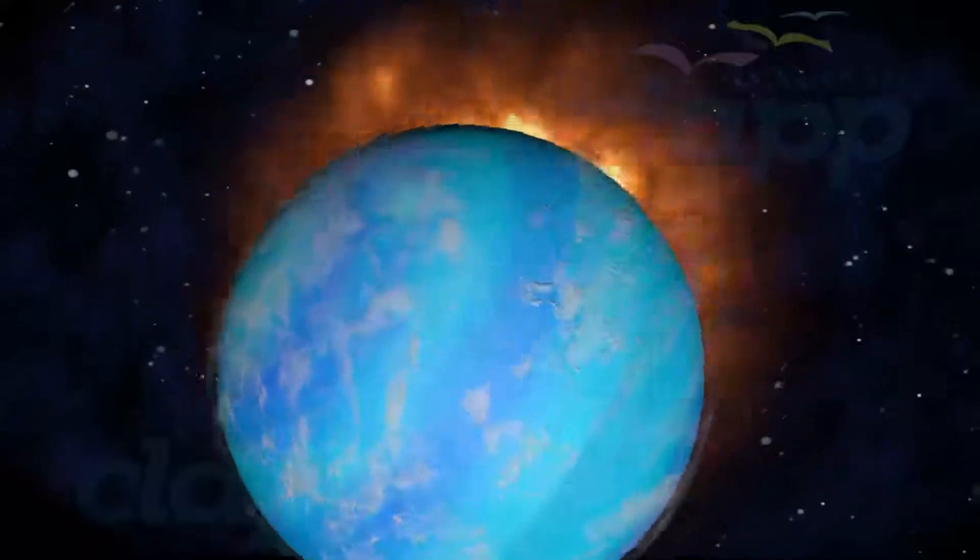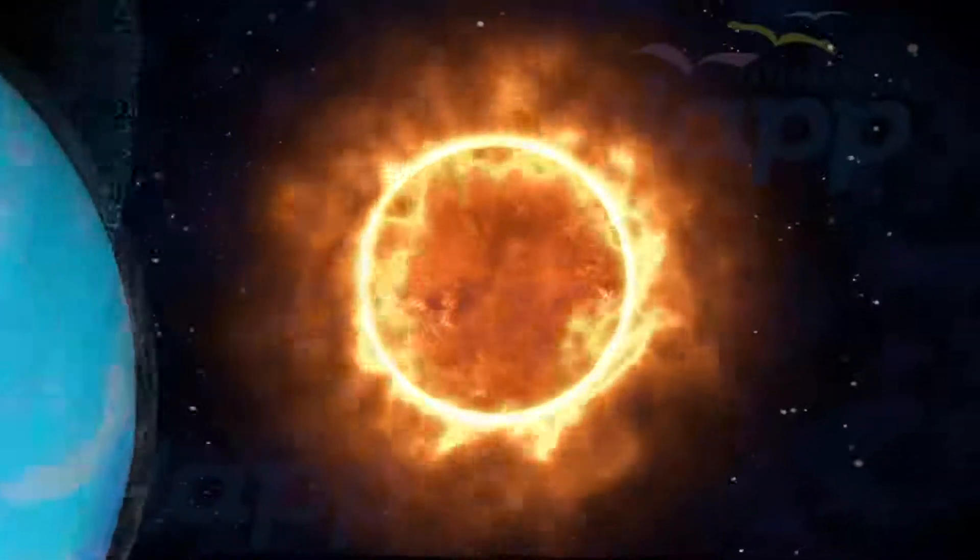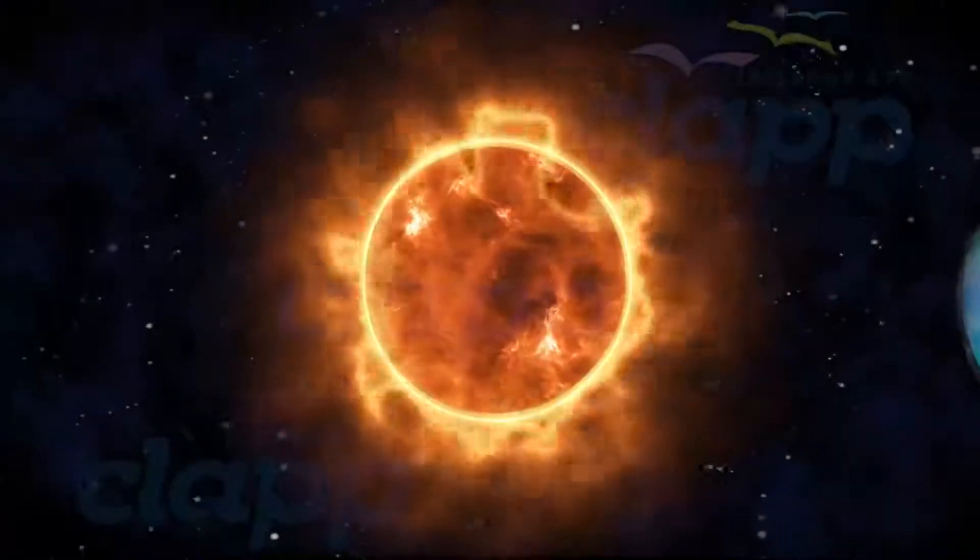It is an ice giant. Uranus was formed approximately 4,503 million years ago.